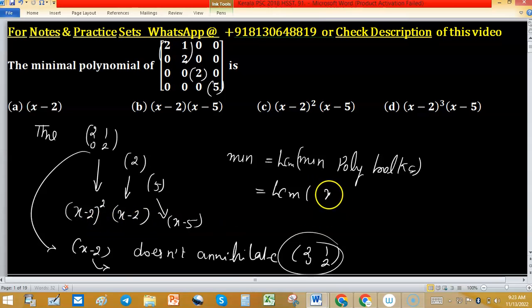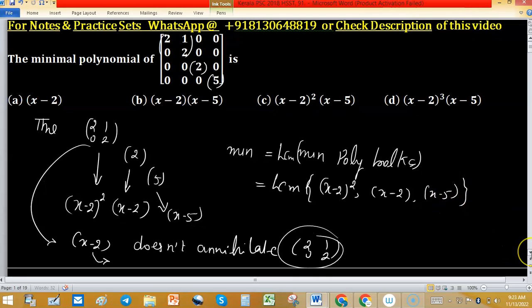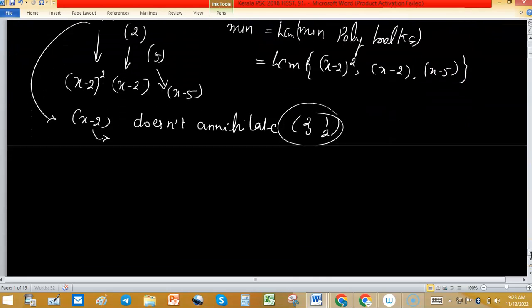So we need to find LCM of (x minus 2) whole square, x minus 2, and x minus 5. To take the LCM, write factors of each term.